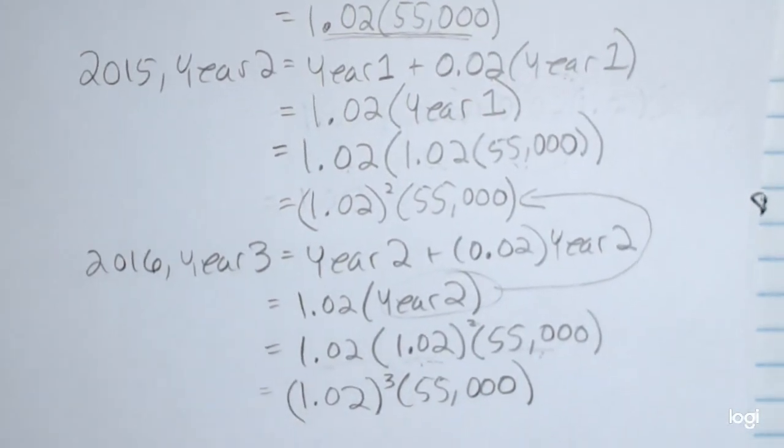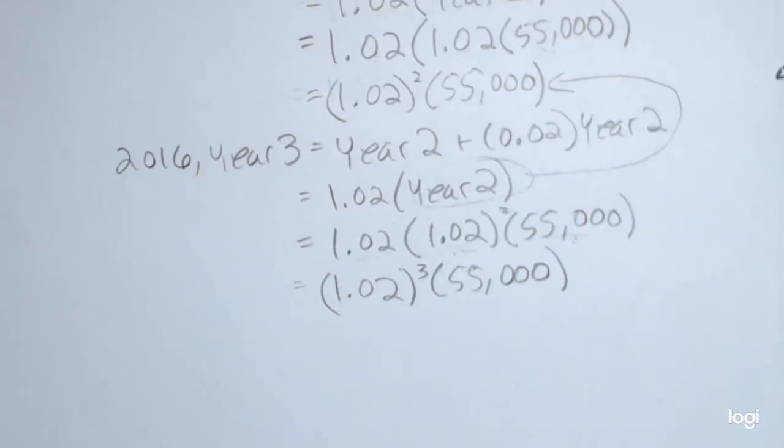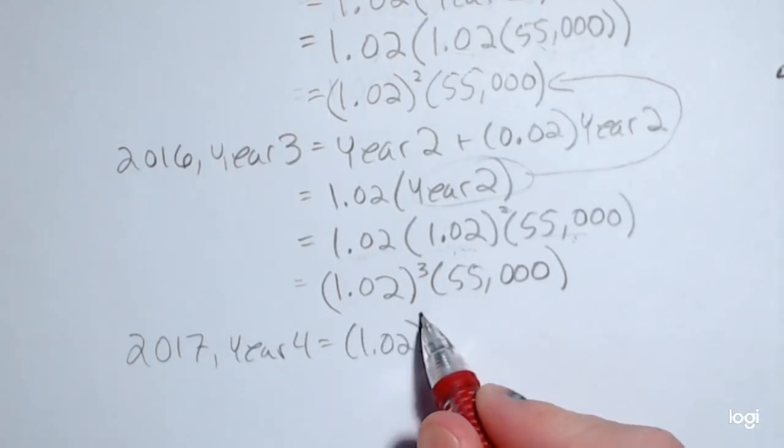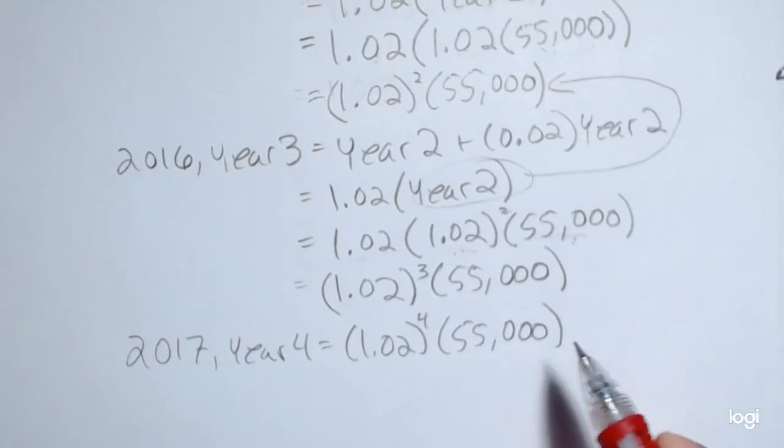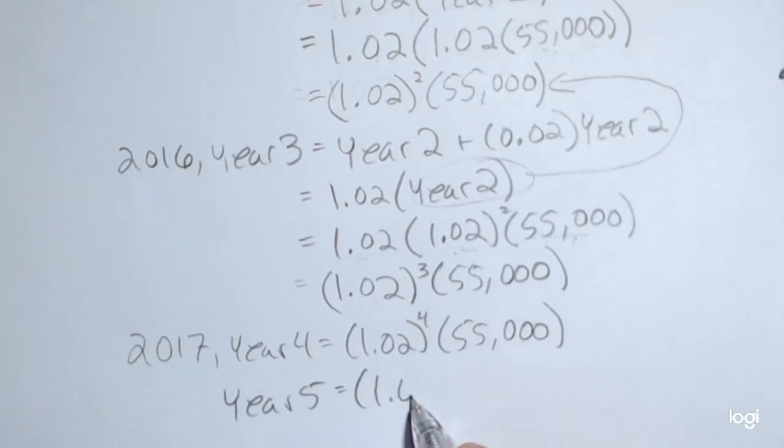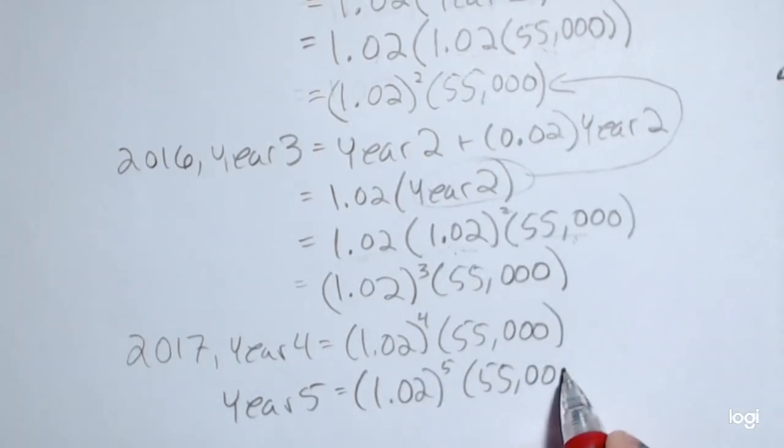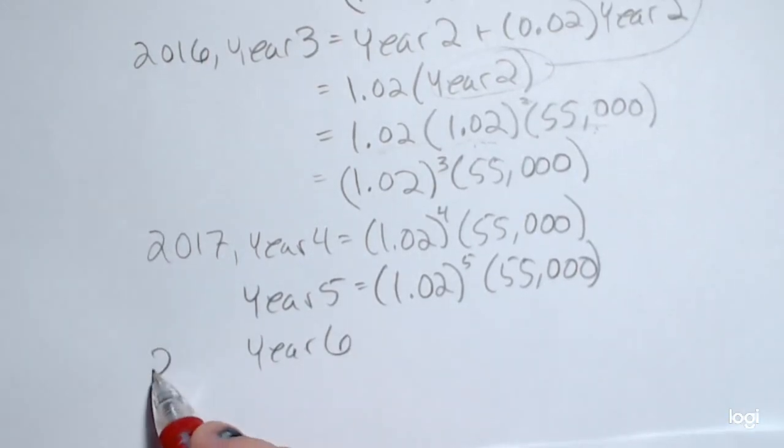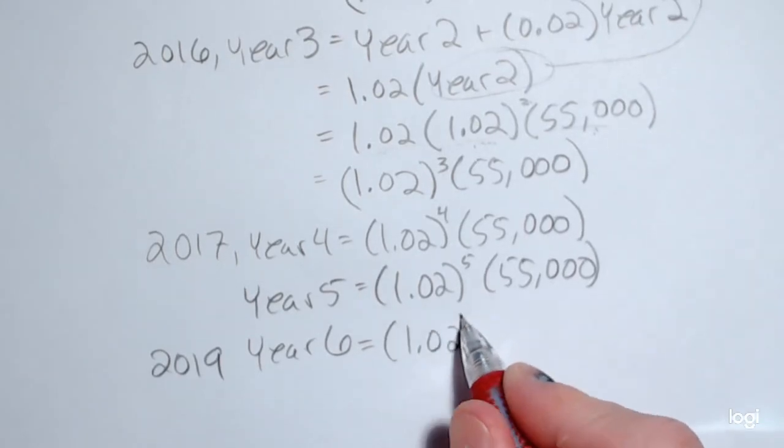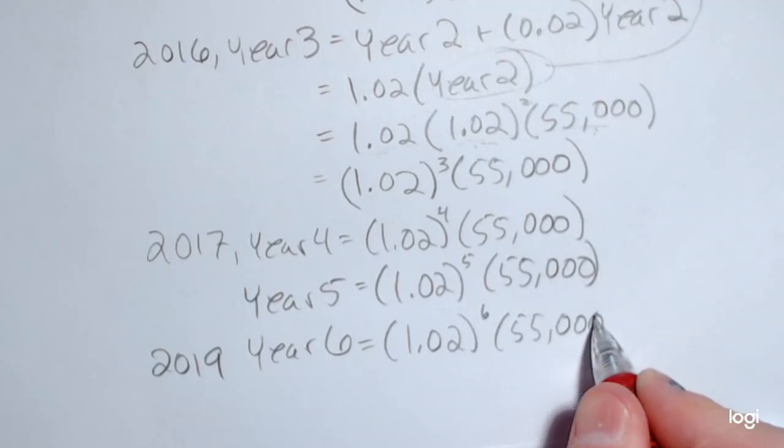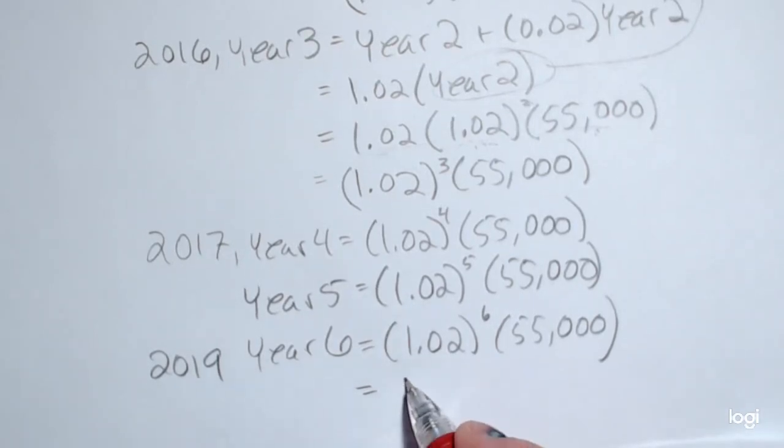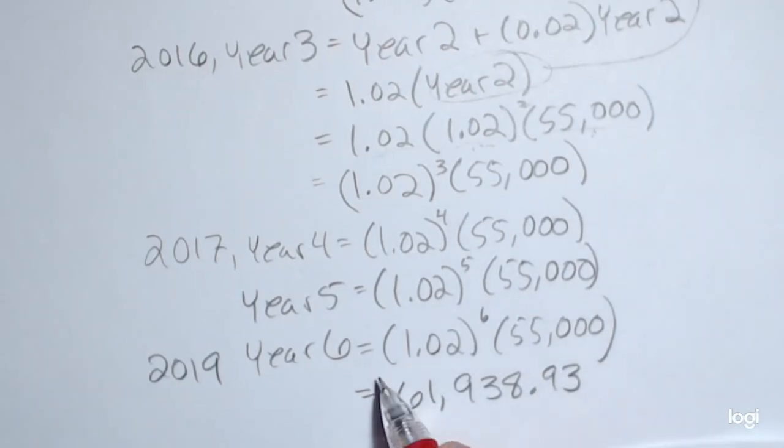So I know in 2017, that would be year four, so 2017 year four, that would be 1.02 to the fourth power times $55,000. Year five, which would be 2018, will be 1.02 to the fifth power times $55,000. And then again, using the same reasoning for year six, which is where we want to end, that would be year 2019. That's going to be 1.02 to the sixth power times $55,000. So multiplying that all out and rounding to the nearest cent, you should get $61,938.93.